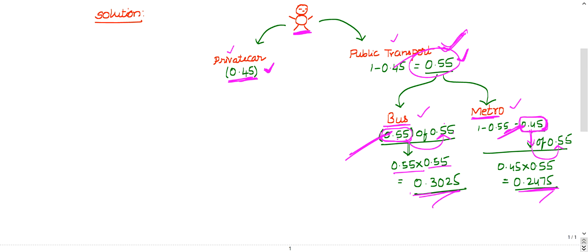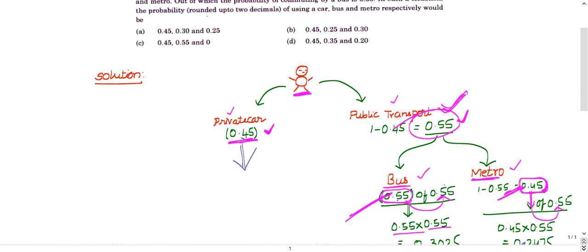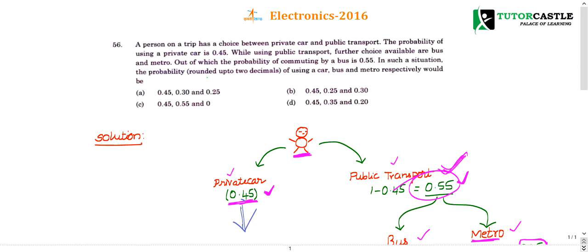So total probabilities are 0.45 for private car, 0.3025 for bus, and 0.2475 for metro. If you look at the options, the nearest values are 0.45, 0.3, and 0.25. So the right choice is option A - car, bus, and metro.